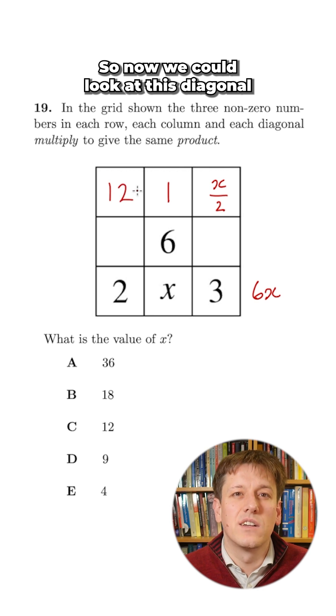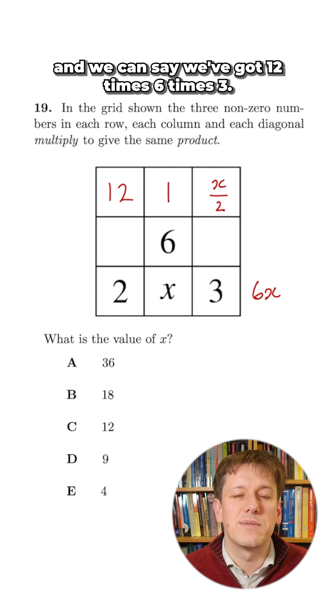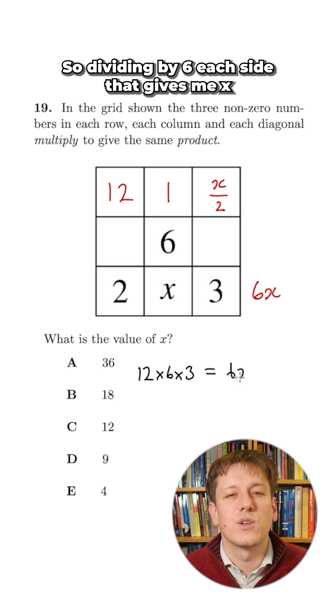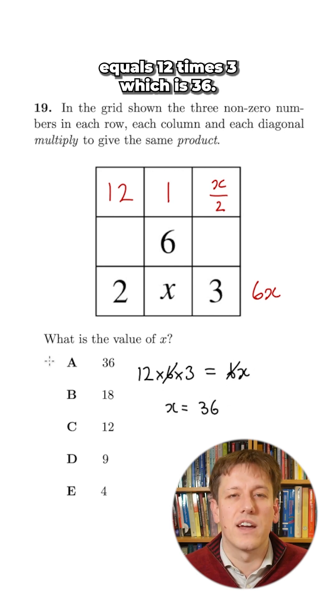So now we could look at this diagonal and we can say we've got 12 times 6 times 3, that's also equal to 6x. So dividing by 6 each side, that gives me x equals 12 times 3, which is 36.